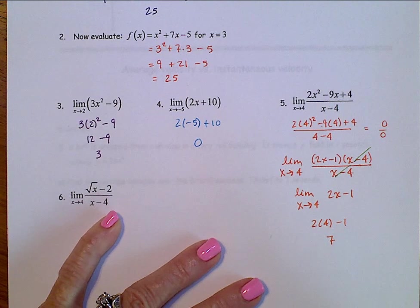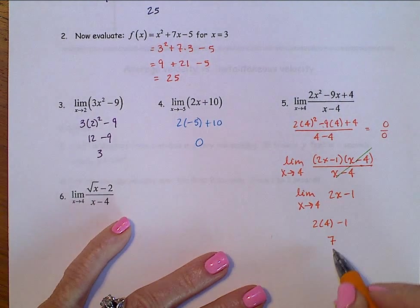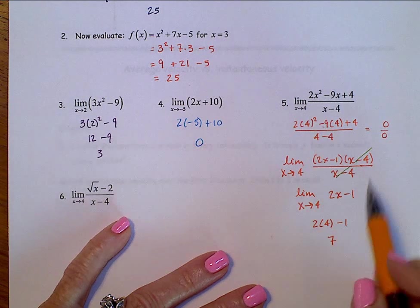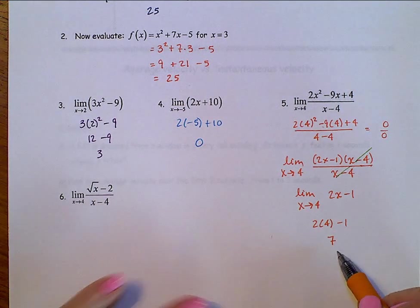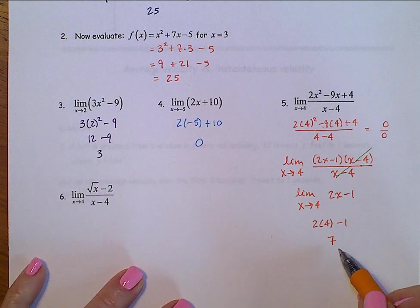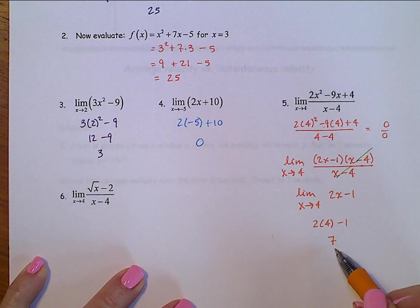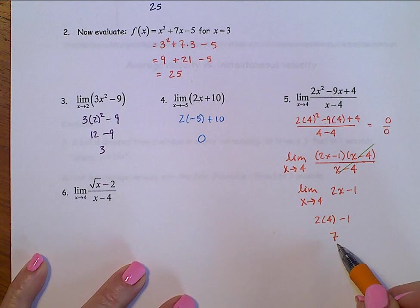Alright, be very, very careful here. This says as x gets close to 4, the y values get close to 7. It does not mean that at 4, y is 7. It means as x gets close to 4, y gets close to 7.